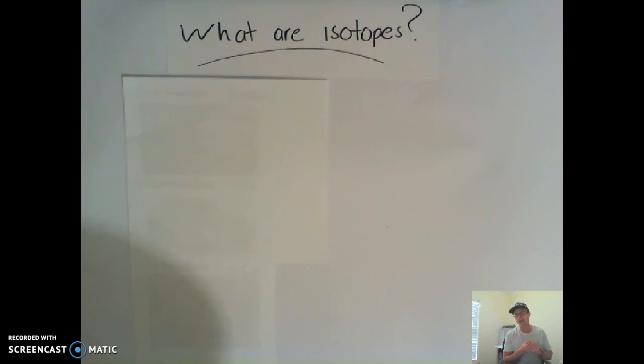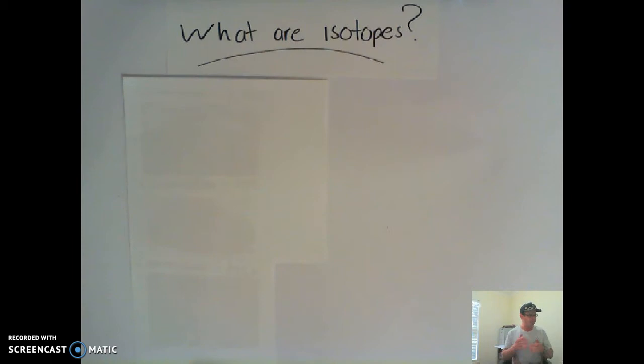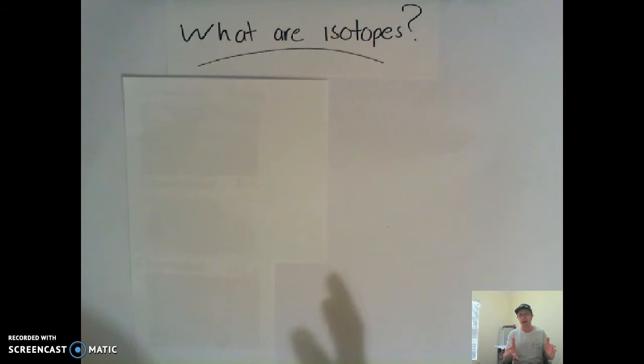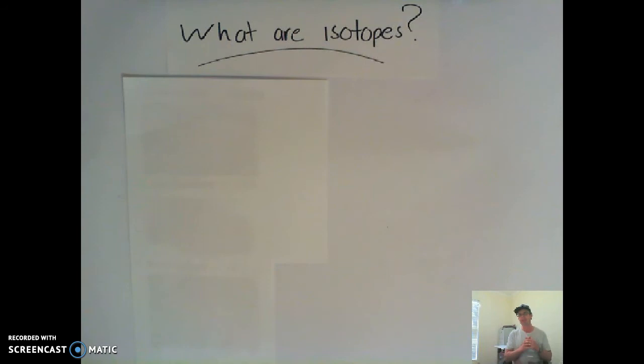Hi guys, how are we going? Next video for our Year 9 chemistry. In the last couple of videos, you would have heard me use the term isotopes. But what are isotopes? An isotope is a word that gets thrown around a lot in chemistry. So let's have a look at what they are. Isotopes are just different versions of atoms and certain types of atoms. So for carbon, I might have three or four different types or versions of the carbon atom. That's a pretty tricky concept to get your head around, the fact that there might be more than one type of carbon atom.